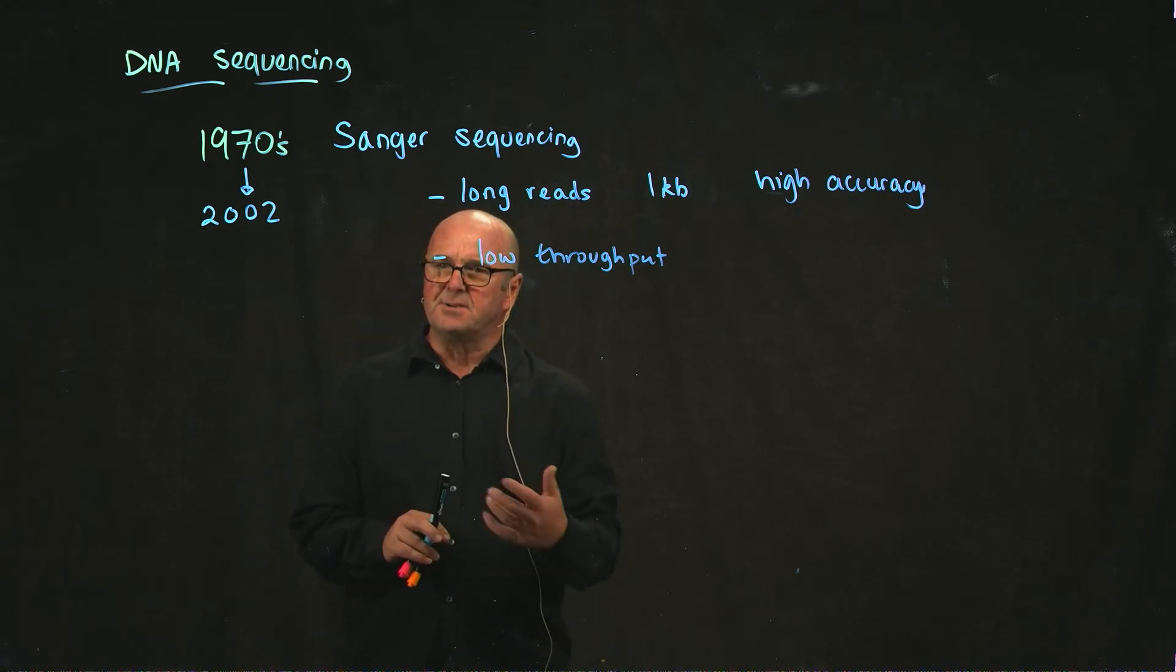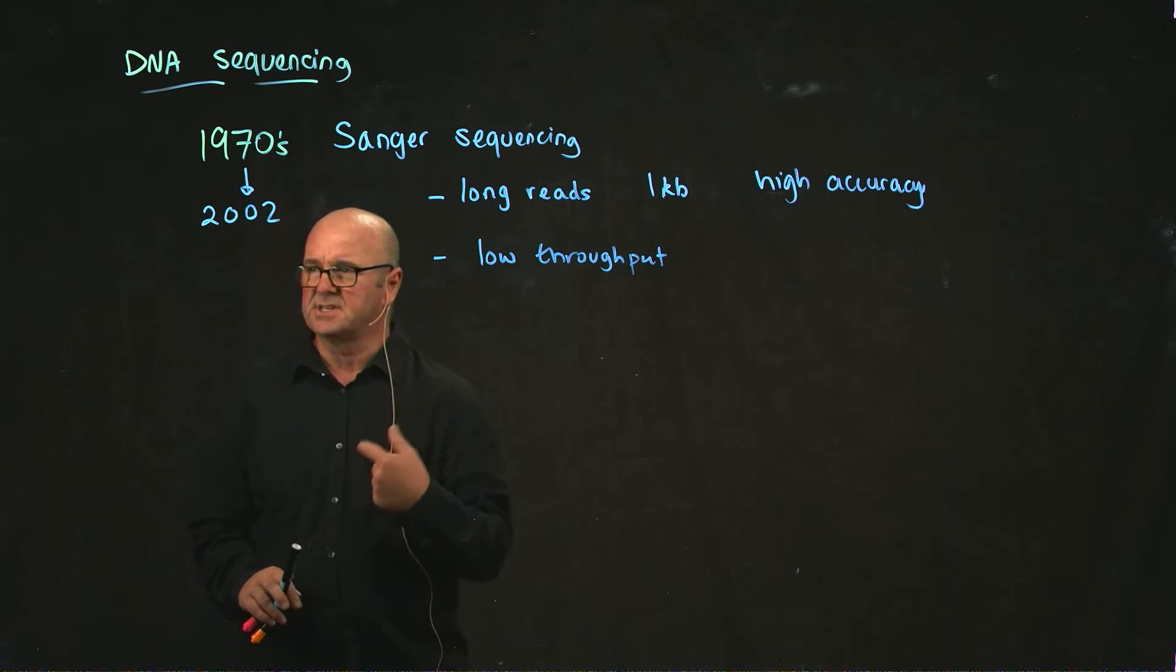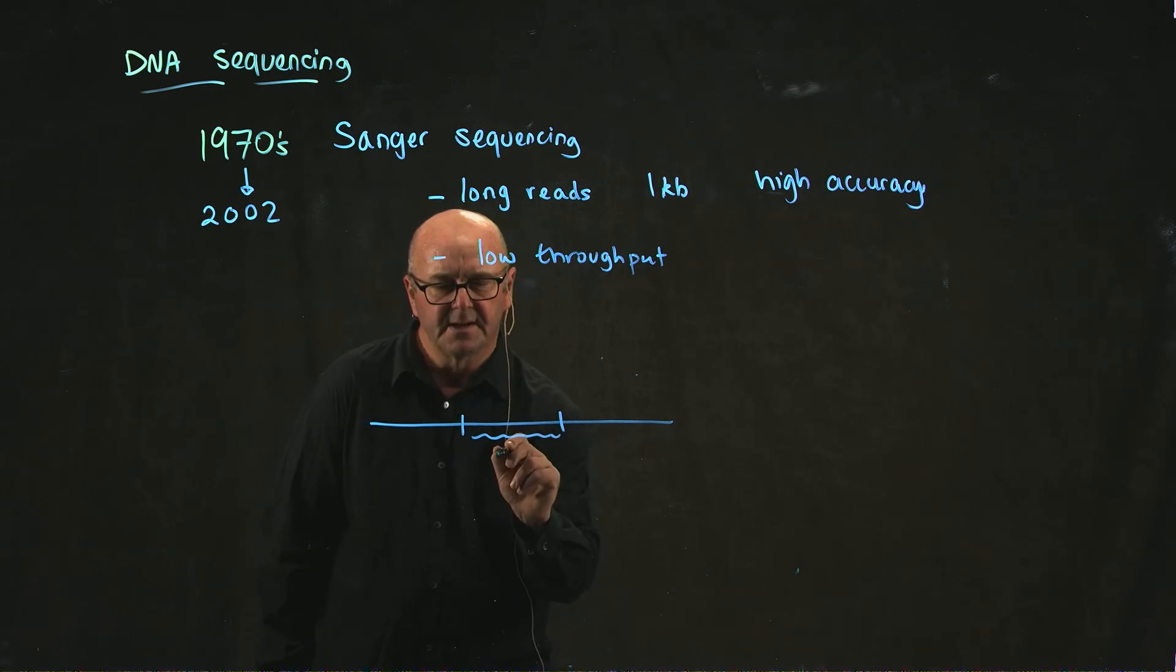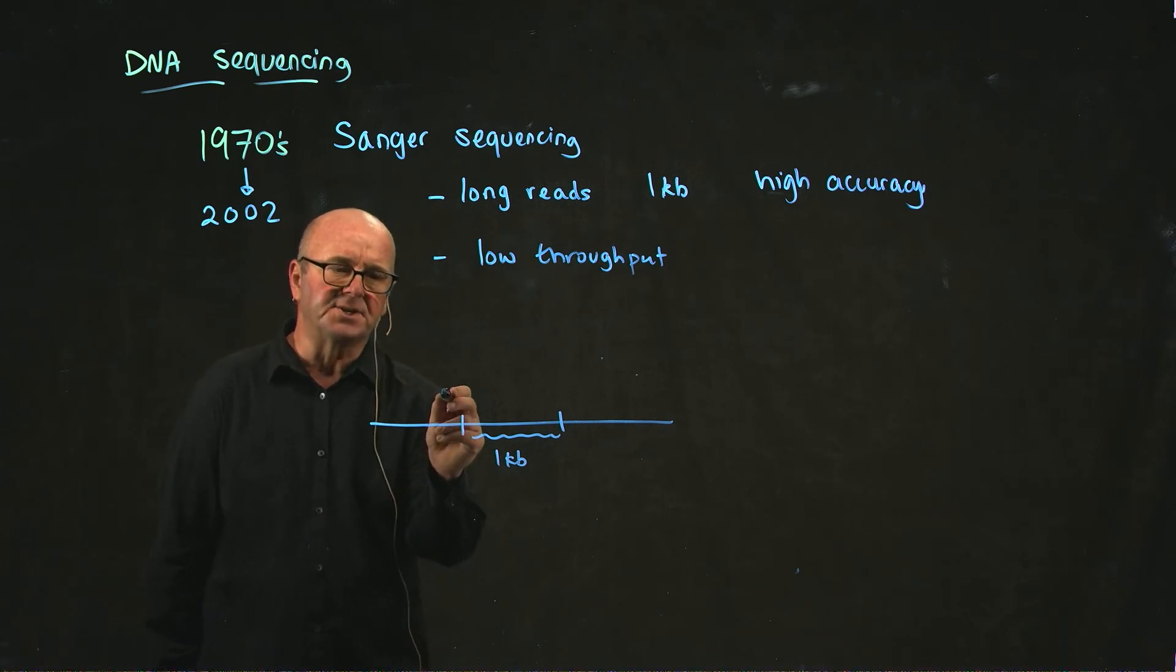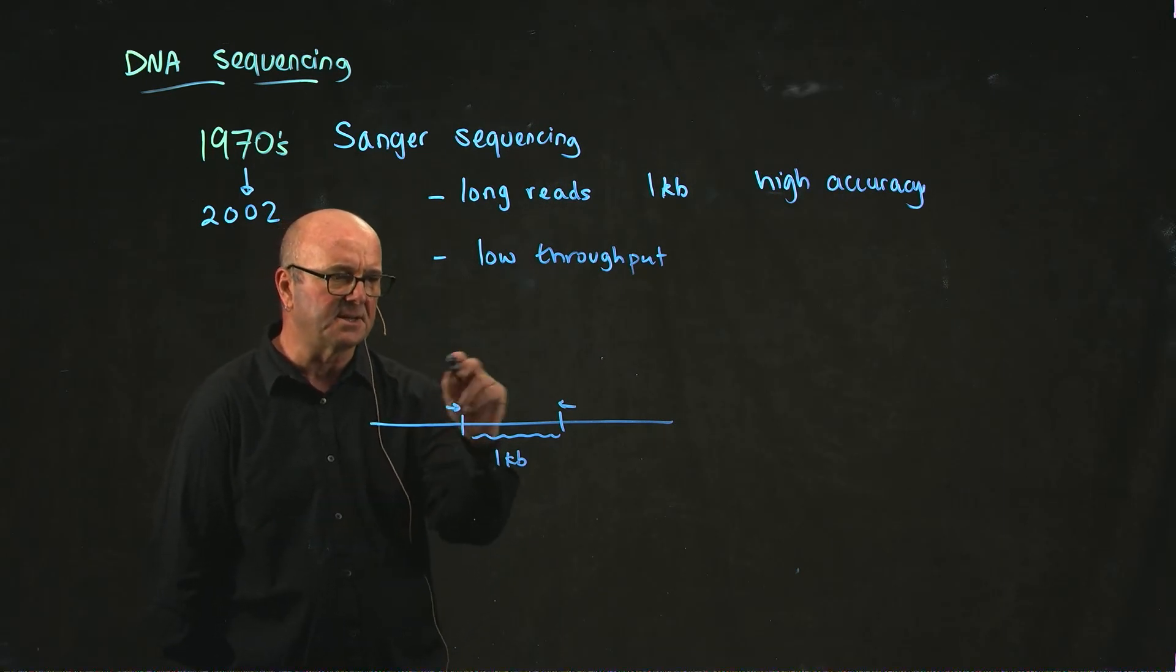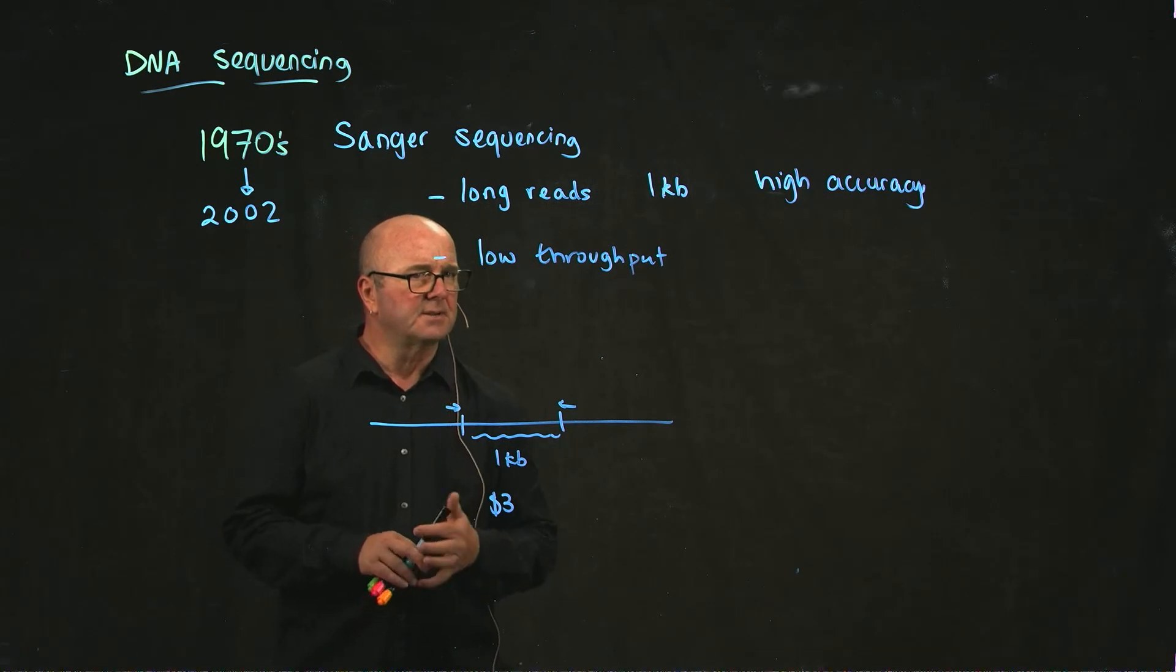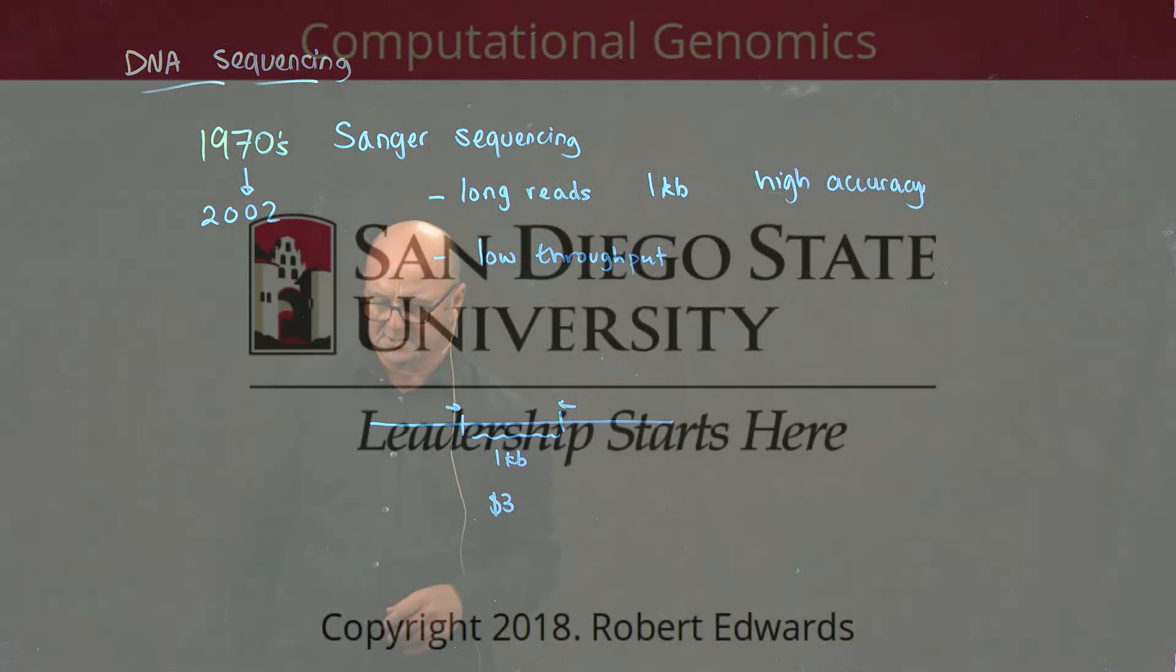It's still in use. We still do Sanger sequencing. And in fact this trace that I'm showing you is one that we created over the summer because we're interested in sequencing a very small region of DNA. And so if you have a piece of DNA and you're just interested in sequencing a short piece that's maybe one KB long or two KB long, then it's actually very cheap to develop a technique where you design primers against that piece of DNA, do the amplification, do the sequencing, and it can cost about $3 to have that done commercially. So this trace that I'm showing cost about $3 to make. It's pretty cheap, it's great for a single piece of DNA. We still use it and we still generate traces like this.